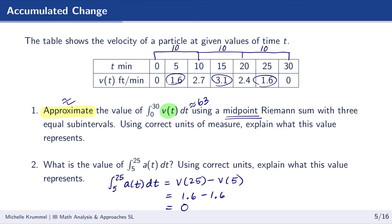What does that 0 mean? It doesn't mean there's no change at all. This is the net amount of change in the velocity over this particular time interval. So the net change in velocity on the interval from t equals 5 to t equals 25 is 0 feet per minute.